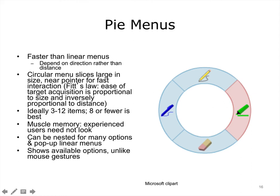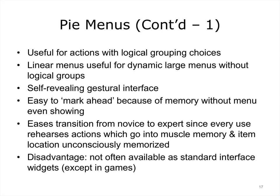Fitts' law states that the ease of target acquisition is directly proportional to the size of the target and inversely proportional to the distance from the cursor. The most effective pie menus have 3 to 12 items and are easiest to use with 8 or fewer. One reason pie menus can be fast is because, with practice, the user can retain the direction of menu items in muscle memory, so that they need not even look at the menu, and the menu need not even have popped up on the screen. Multiple nested items can be selected in rapid sequence. Pie menus are most useful for actions with logical grouping choices with a limited number of items. They constitute a self-revealing gestural interface, and because of memory, it can become easy to mark ahead, increasing speed of interaction. The menus can increase the transition from novice to expert, since every use rehearses the action and forms muscle memory, allowing item locations to be unconsciously memorized.